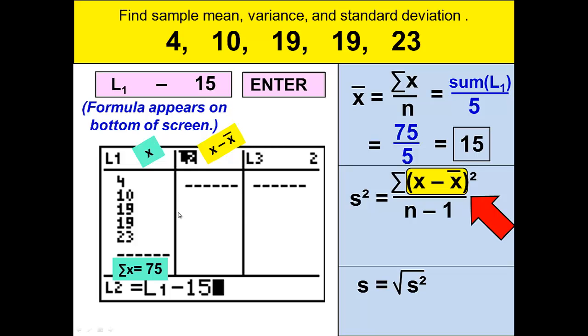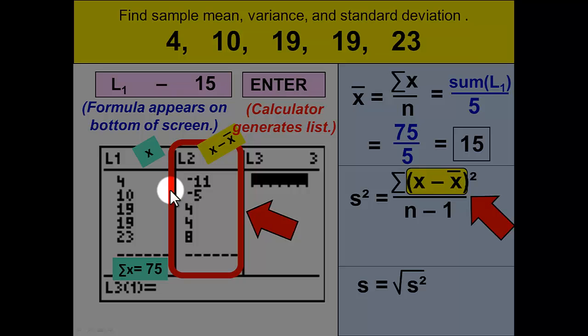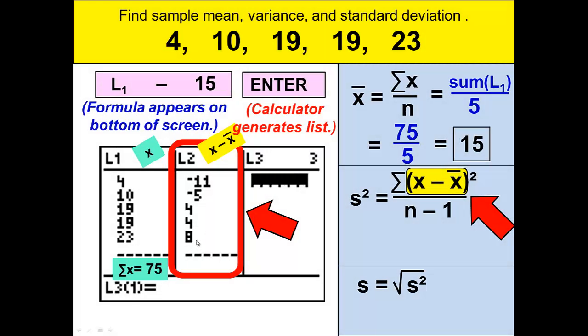When we press enter, and by using the magic of the calculator, you will suddenly get all of list 1 numbers subtract 15. 4 minus 15 is negative 11. 10 minus 15 is negative 5. 19 minus 15 is 4. 19 minus 15 is 4. And 23 minus 15 is 8. And it didn't take long for me to say that, but with certain numbers, it will be much easier to calculate this way than to try to do that without making a mathematical error on your own.